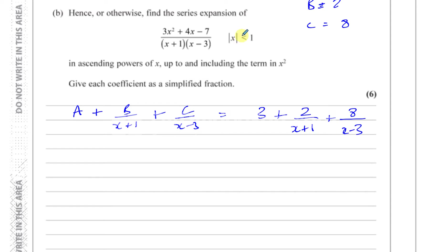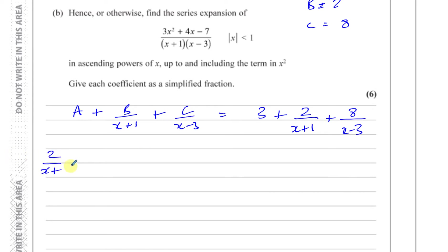Given that the modulus of x is less than 1, in ascending powers of x — meaning from the lowest to the highest — up to and including the x² term, giving each coefficient as a simplified fraction. So I'm going to take 2 over (x+1) as a separate thing.